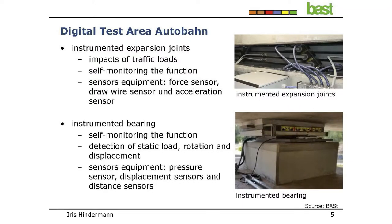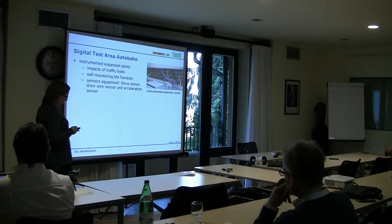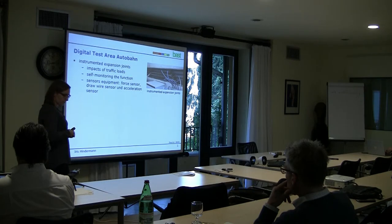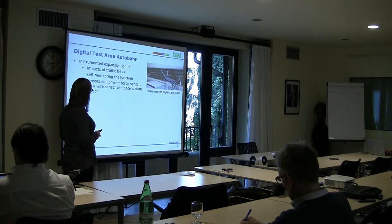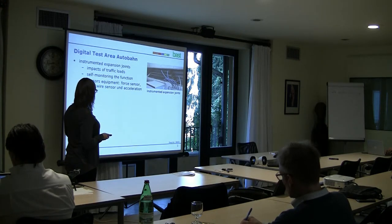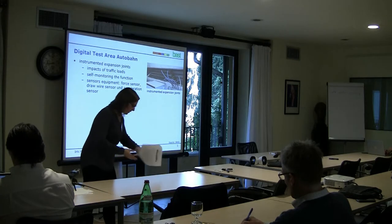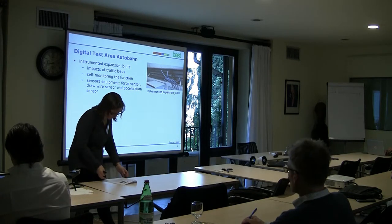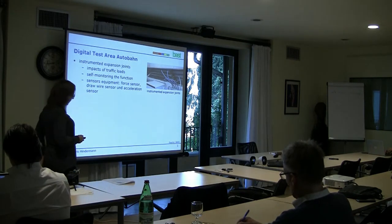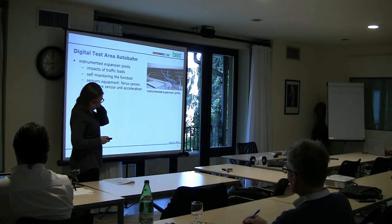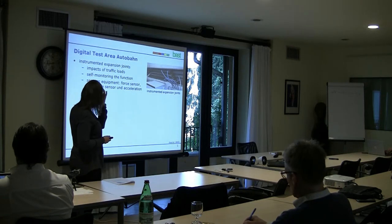The first sensor system is the instrumented expansion joint, which detects the impact of traffic load using force transducers and calibration after load tests. This also enables self-monitoring of function. Dual wire gaps are used for detection of joint gap changes, and acceleration sensors are used to detect vibration.